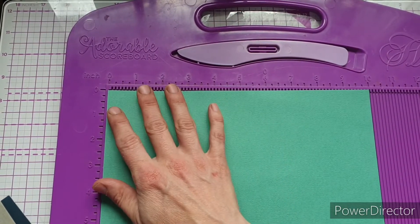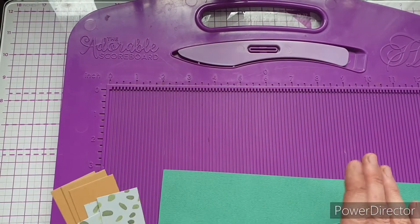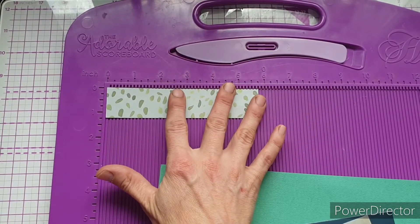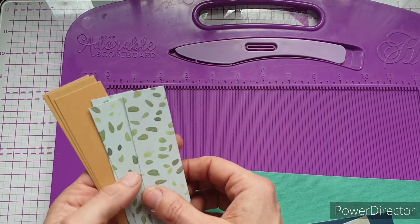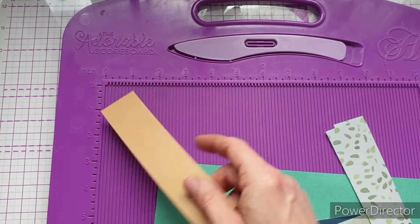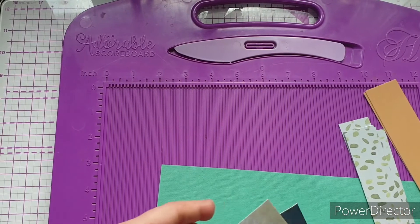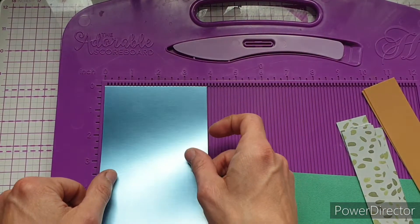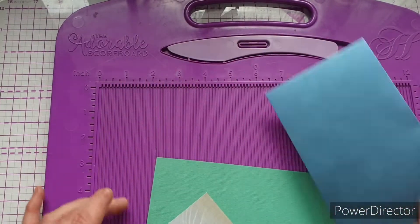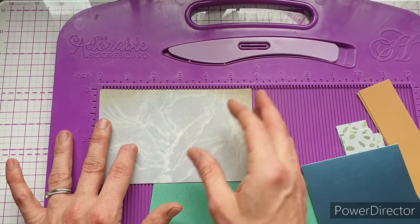The card base is 10 inches by 6 inches, and then you need four pieces that measure one and a quarter by five and three quarters for your patterned paper. Your layer for underneath your patterned paper measures one and three eighths by five and seven eighths, so you need four of those. The mirror card measures three and seven eighths by five and seven eighths, and then the water piece measures three and three quarters by five and three quarters.